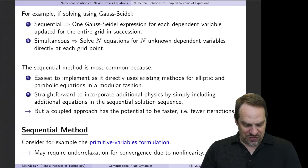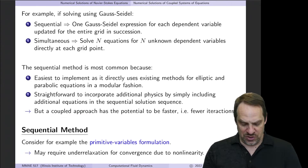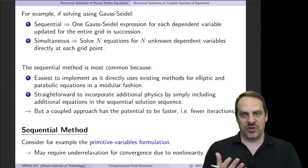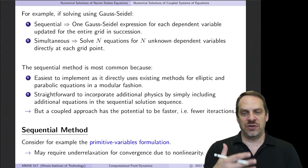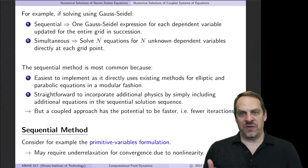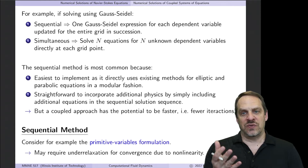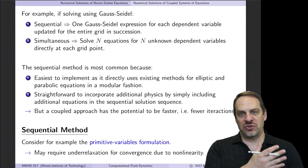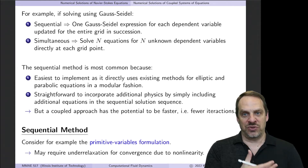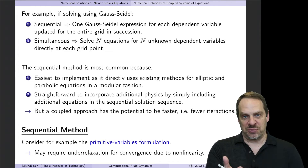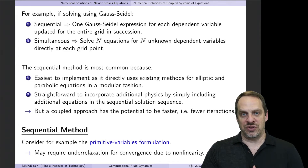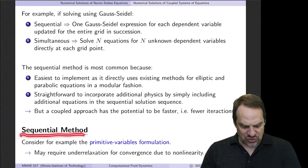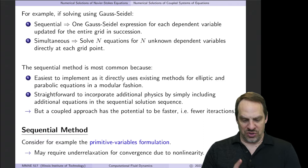The coupled approach does have the potential to be faster — in other words, it may require fewer iterations to achieve convergence. So that's the trade-off: the practical advantages of the sequential approach versus the potential speed advantage of the coupled approach. But with the coupled approach you lose those other practical advantages. Let's now look at the sequential approach in more detail.